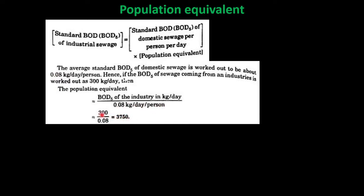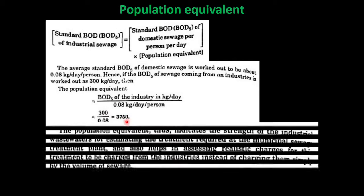For example, 300 divided by 0.08 equals 3,750. This population equivalent indicates the strength of the industrial wastewater for estimating the treatment required at the municipal sewage treatment plant, and helps in assessing realistic charges for treatment from industries rather than charging simply by volume of sewage.